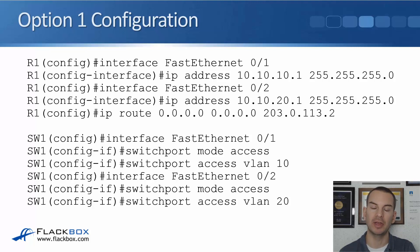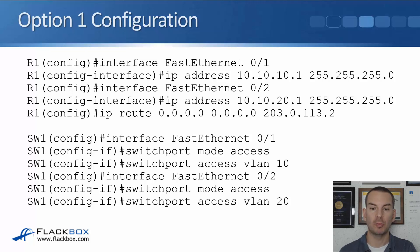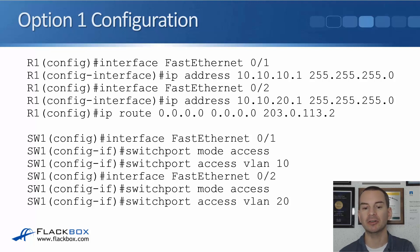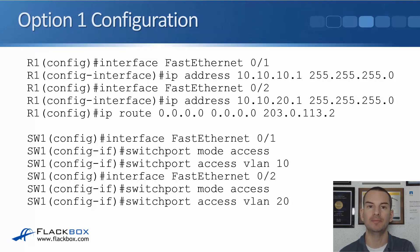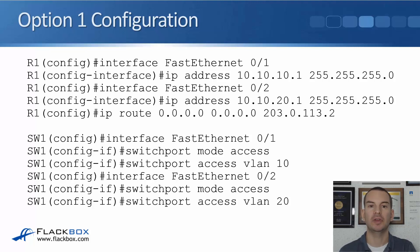On the switch, a matching configuration is needed: interface Fast Ethernet 0/1 with switchport mode access and switchport access vlan 10 for engineering, and interface Fast Ethernet 0/2 with switchport mode access and switchport access vlan 20 for sales. When using a router with separate interfaces, the switch configuration treats the router port just like a normal end host or PC.